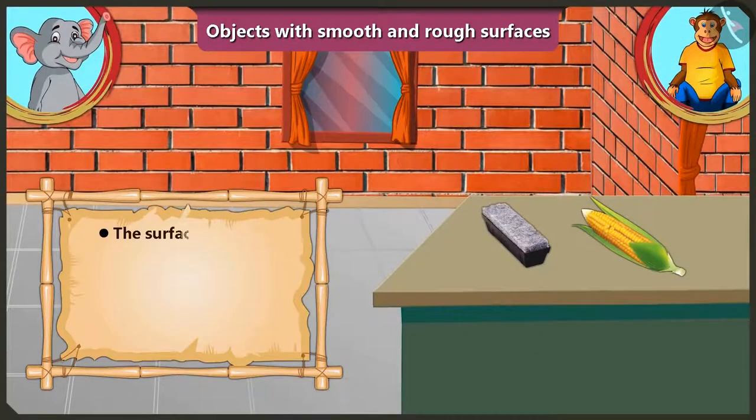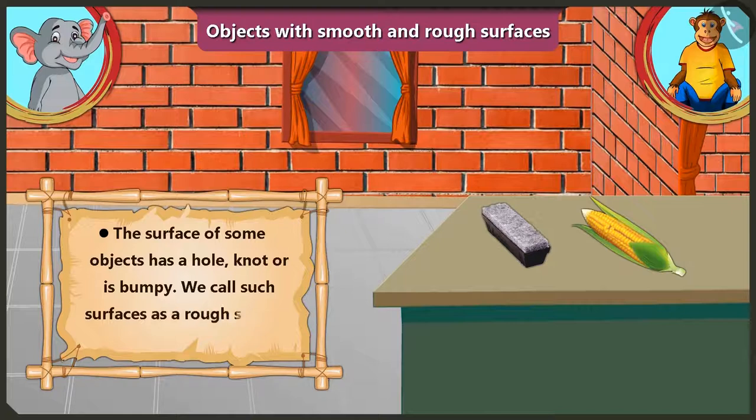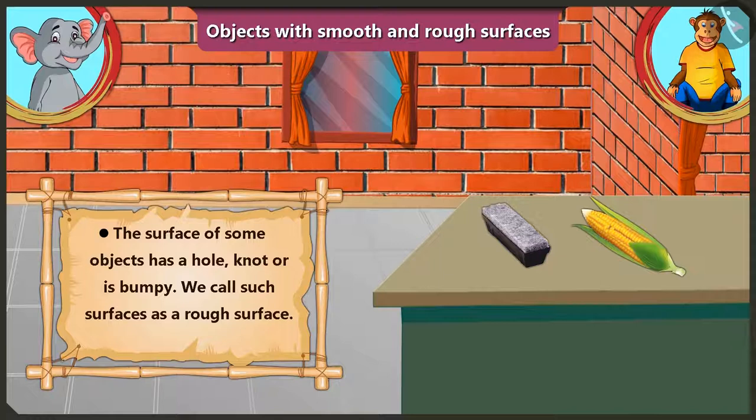Appu, when the surface of an object has a hole, knot or if it is bumpy, we call that surface a rough surface. Which means the surface is rough. Our hand cannot slide on it easily.